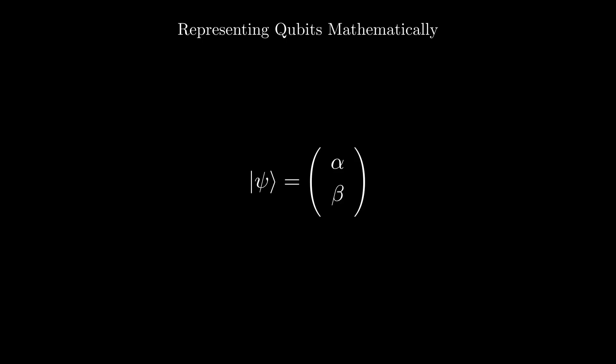Mathematically, we can represent a qubit as a column vector with two elements. The top element indicates how much the qubit is in the zero state, and the bottom element indicates how much the qubit is in the one state. The convention for a quantum state is to set it equal to the Greek letter psi.